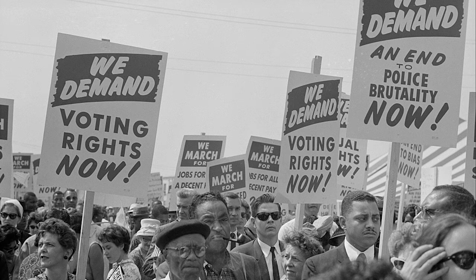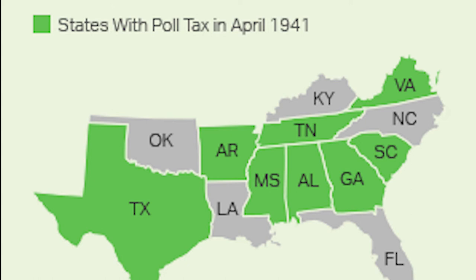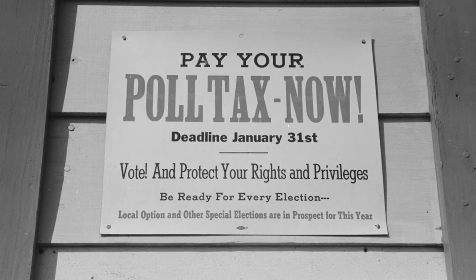Following the Civil War, a trio of constitutional amendments abolished slavery — the 13th Amendment — made formerly enslaved people citizens — the 14th Amendment — and gave all men the right to vote regardless of race — the 15th Amendment. Nonetheless, many states, particularly in the South, used poll taxes, literacy tests, and other measures to keep their African-American citizens disenfranchised.